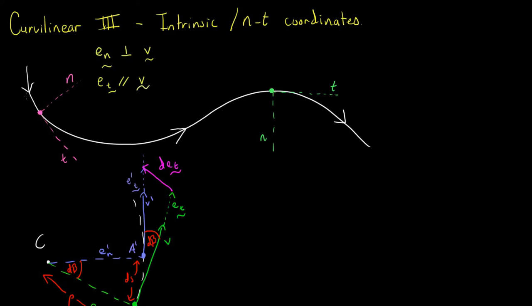Here we have a particle moving along a path that varies, such as this. We can define two unit vectors in the direction normal and tangential to the velocity vector. We have e_n, which is a unit vector always perpendicular to the velocity vector, and e_t, which is a unit vector always parallel to the velocity vector.